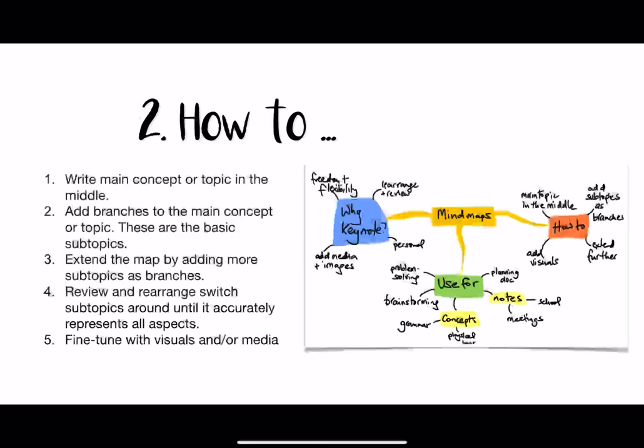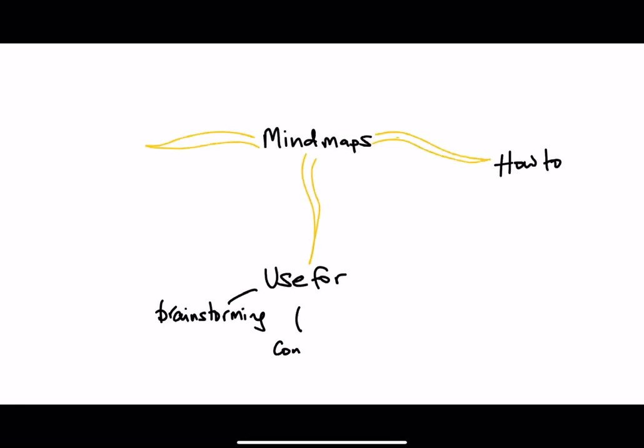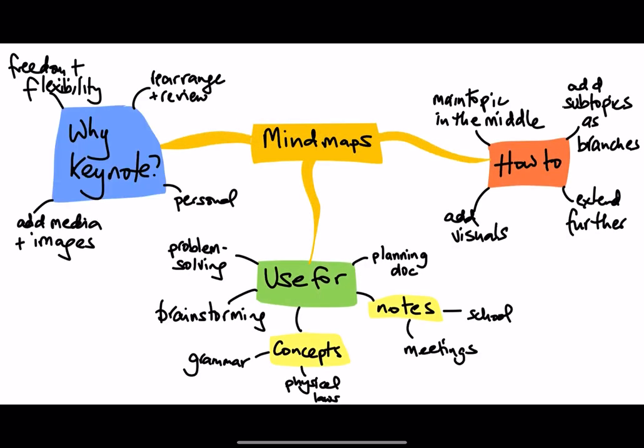So how do you actually do a mind map? It's really easy. You have the topic in the middle and you start to branch out, just showing what aspects the topic has. Here I animated my mind map for you, so you can see the possibilities.